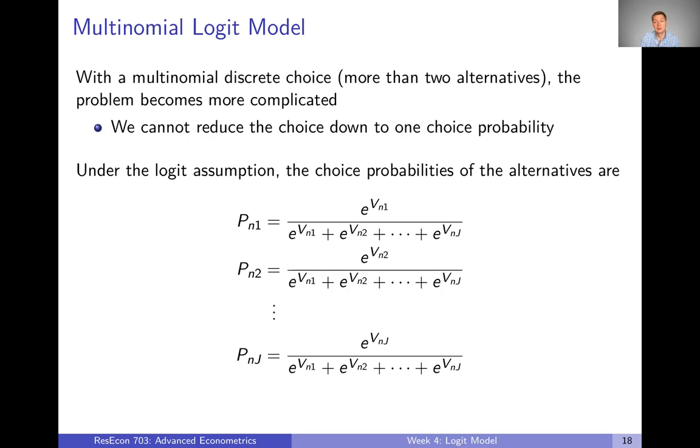When we have a multinomial logit model, we want to express the choice probability of each alternative. Like I showed in one of the first videos this week, the choice probability for any alternative is the exponential of its representative utility divided by the sum of the exponential of representative utility summed over all alternatives. The number of terms in the denominator is obviously going to scale with the number of alternatives that we have. Things get mathematically a little more complicated to keep track of as we have more and more alternatives.